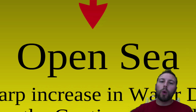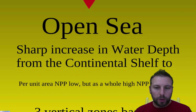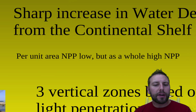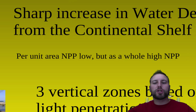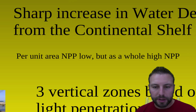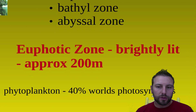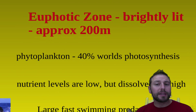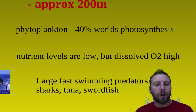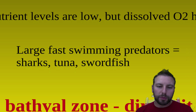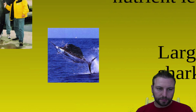Moving away from the shoreline into our open sea, we have a sharp increase in water depth past the continental shelf. Per unit area the net primary productivity is low, but because there is so much ocean, we have a high net primary productivity as a whole. There are three vertical zones based on light penetration: the euphotic, bathyal, and abyssal zones. Our euphotic zone, right at the top, is brightly lit and contains most of our phytoplankton. Nutrient levels are low but dissolved oxygen is high, with lots of mixing with the atmosphere for easy gas exchange. We see larger, faster-swimming predatory fish here — sharks, tuna, and swordfish.